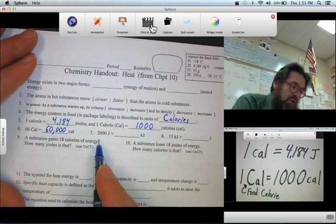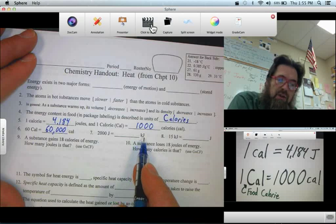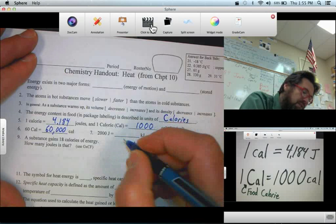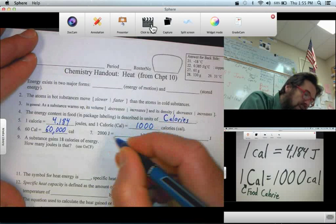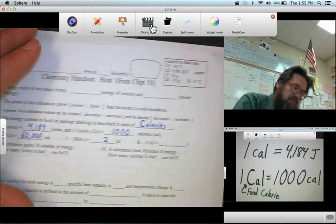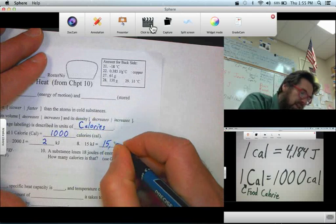2,000 Joules, how many KJ, or Kilojoules? Well, Kilo means 1,000. A kilogram is 1,000 grams. A kilometer is 1,000 meters. So, 2,000 Joules is 2 Kilojoules. 15 Kilojoules is 15,000 Joules.